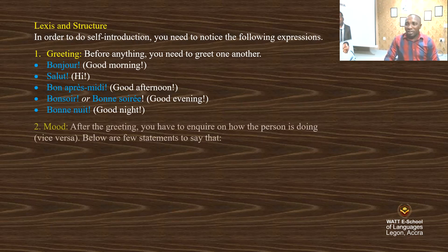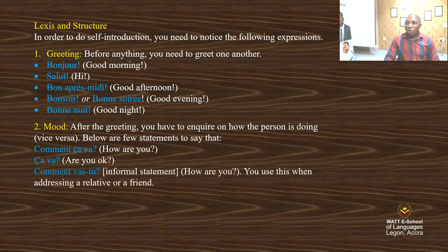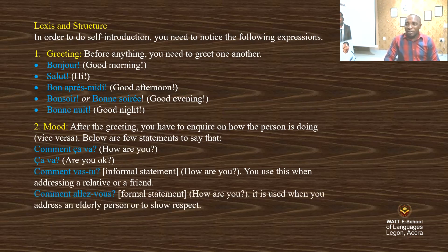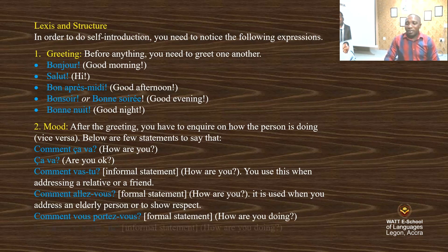To know the mood of someone, after greeting, you have to inquire how the person is doing, and vice versa. Here are a few statements: 'Ça va?' means 'Are you okay?' 'Comment tu vas?' is an informal statement also meaning 'how are you?' — used when addressing a relative or friend. 'Comment allez-vous?' is a formal statement, meaning 'how are you?' — used for elderly persons or to show respect. 'Comment vous portez-vous?' is also formal, meaning 'how are you doing?' And 'Comment te portes-tu?' is the informal equivalent.